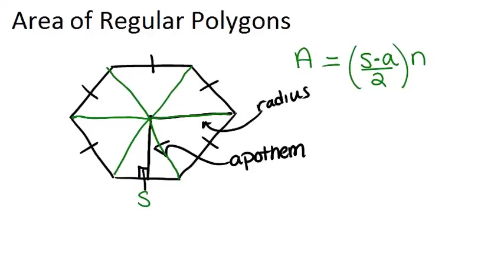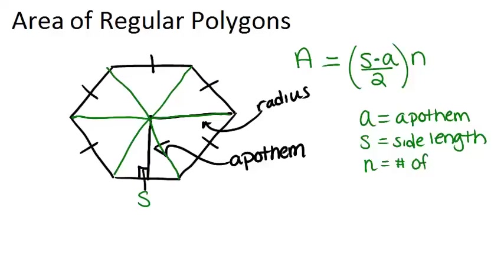So in this formula, a equals apothem, which is really just the height of one of those triangles. s equals the side length. And remember, since it's a regular polygon, all the sides are the same length. And n is the number of sides. In this case, it would be a hexagon, so n would be six.